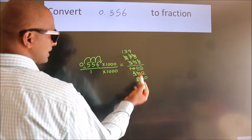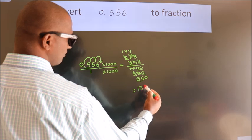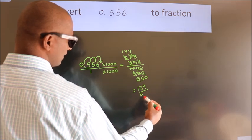Further cannot be simplified. So our fraction is 139 by 250.